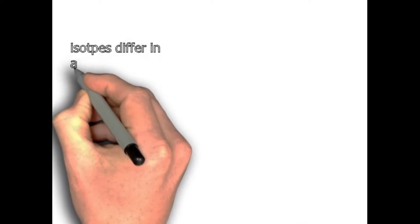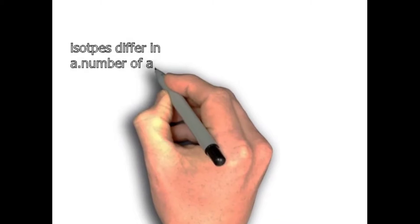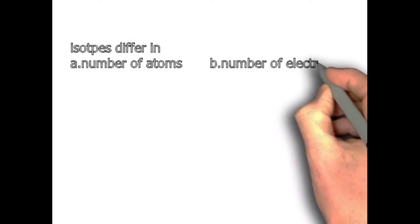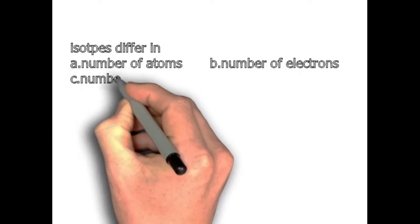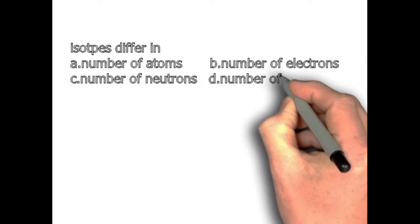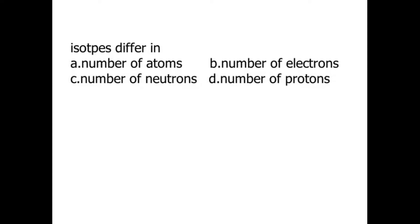Isotopes differ in: first option, number of atoms; second option, number of electrons; third option, number of neutrons; and fourth option, number of protons. To understand this MCQ, we should get an example.